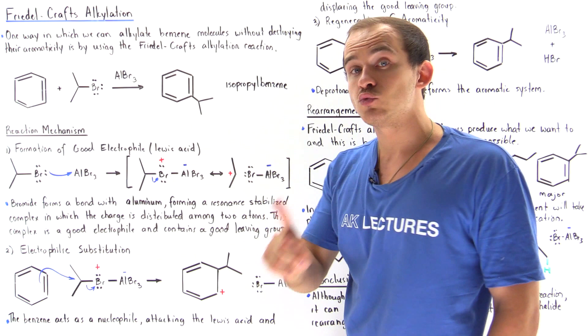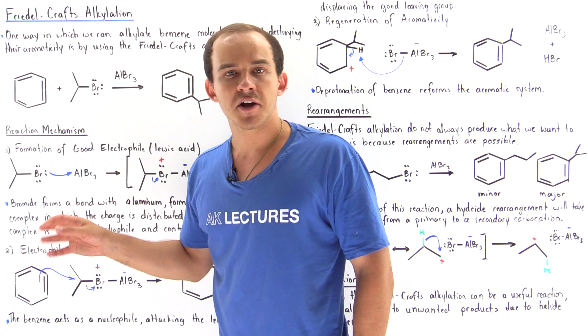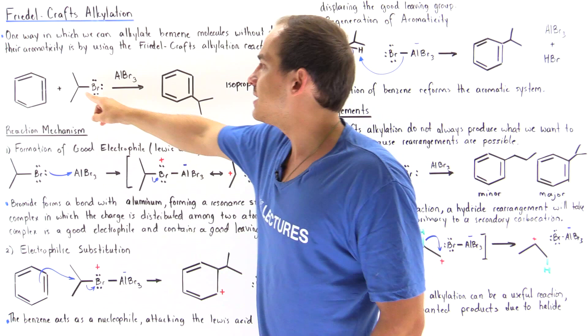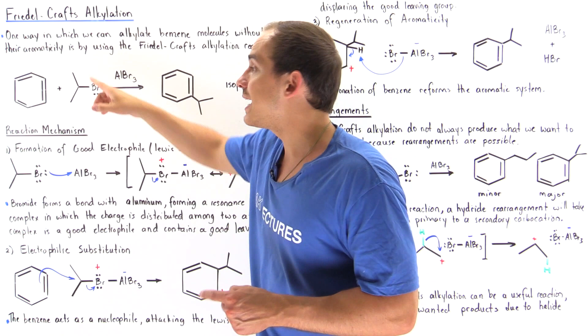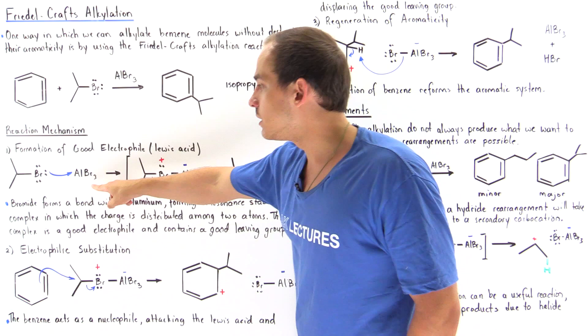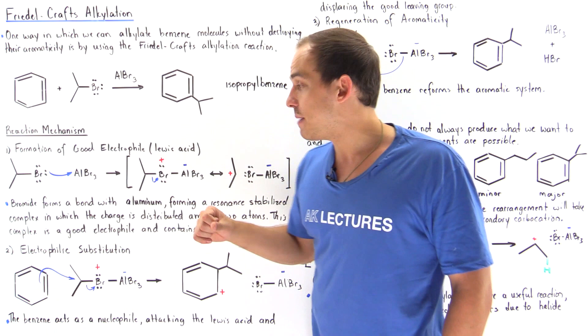Forming that sigma bond places a positive charge on the bromide and a negative charge on aluminum, which weakens the bond between the bromide and our carbon. On the reactant side, the bond between carbon and bromide was very strong, which is why without the catalyst, the weak nucleophile benzene would not be able to attack this carbon and displace the bromide — because bromide is a bad leaving group and the carbon-bromide bond is strong. But in the presence of aluminum bromide catalyst, we undergo this reaction, weakening that bond.